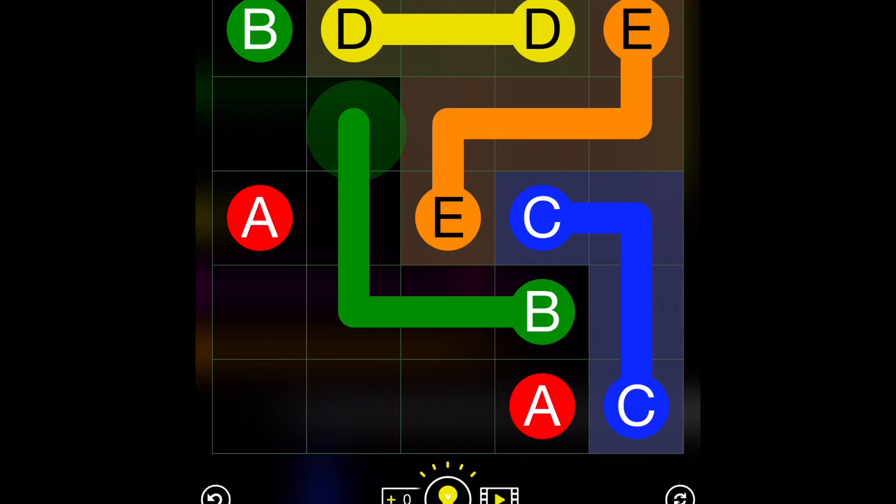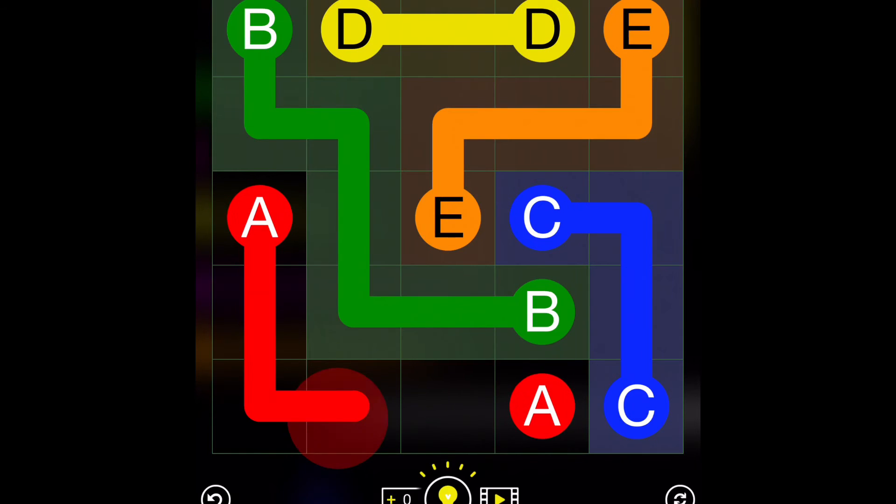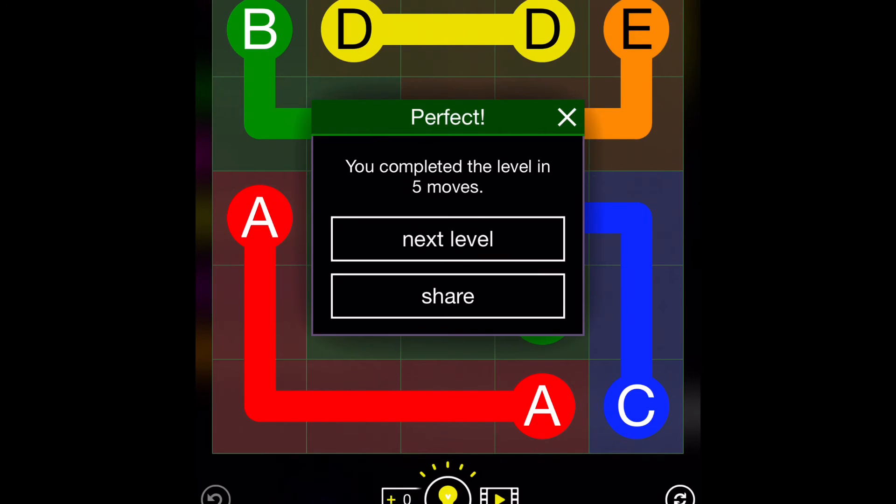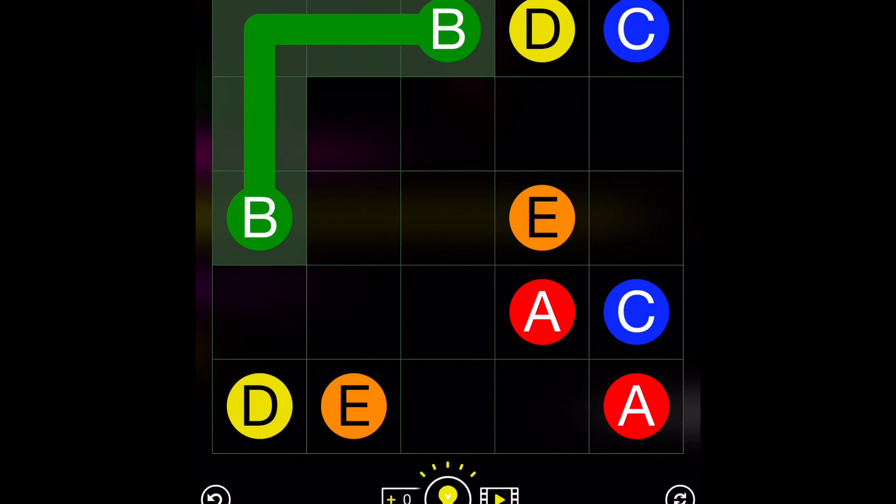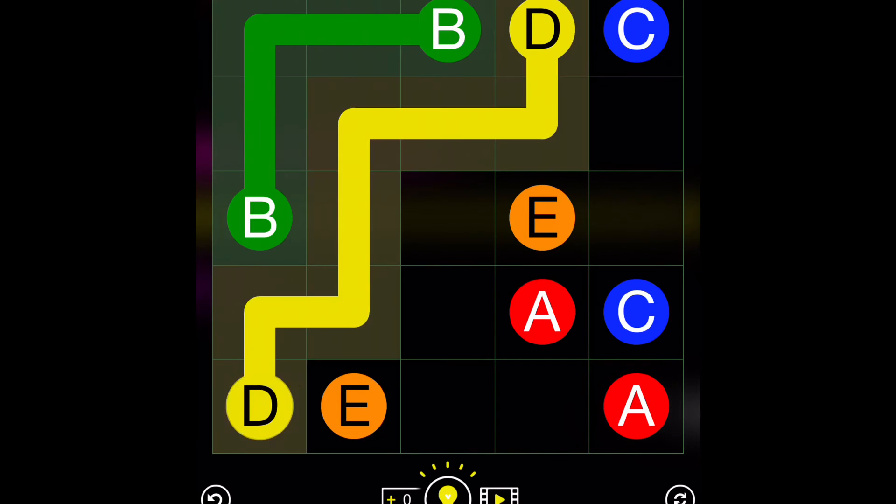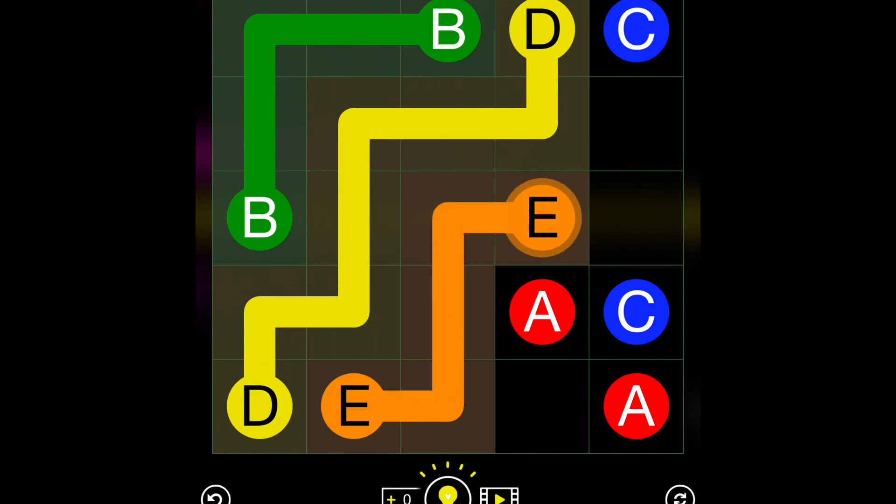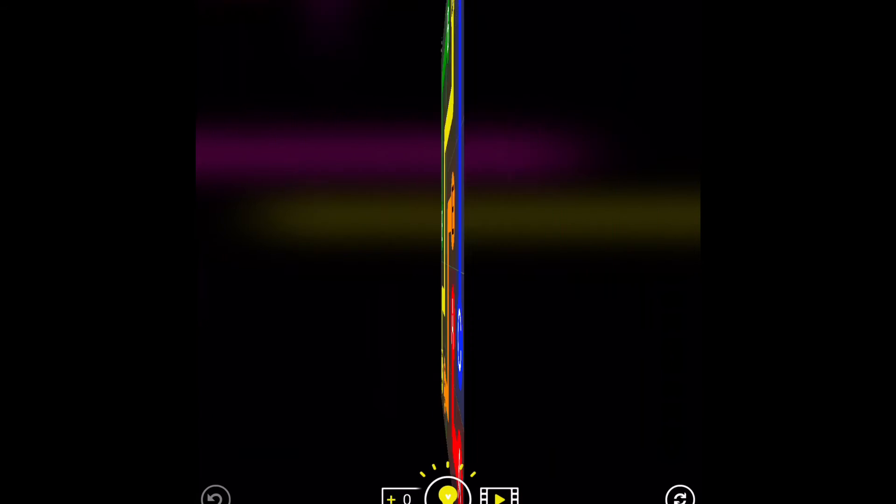Anyway, we're doing this level now. Perfect. Five moves. Get in. But, obviously, B connects to the B via the outside route, then you've got D, and then you've got E, then you've got A, and then you've got C. Perfect.